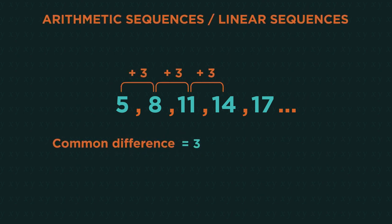Arithmetic sequences have a common difference. This means that they always go up by the same amount. So the common difference for this sequence is 3.